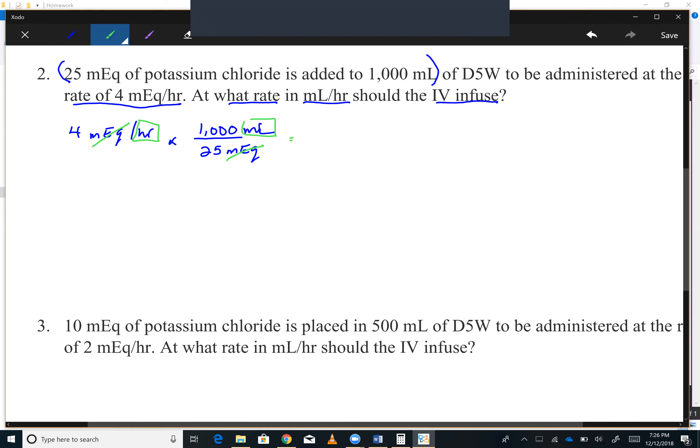So 4 times 1000 is 4000. You want to divide by 25. And that is going to be 160 mLs per hour.